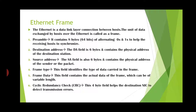The Ethernet is a data link layer connection between hosts. The unit of data exchanged by hosts over Ethernet is called a frame. The first field is the preamble — it contains 8 bytes (64 bits) of alternating zeros and ones to help the receiving host synchronize. The destination address field is a 6-byte address containing the physical address of the destination station. The source address field is also 6 bytes and contains the physical address of the sender.